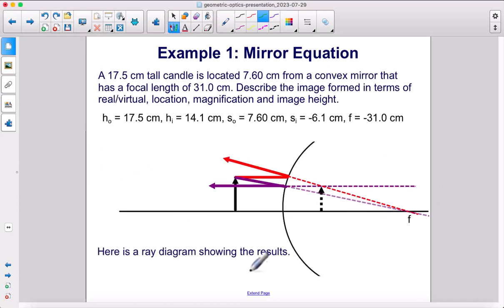Here is a ray diagram confirming the results. We have an image that is virtual, so it's on the dark side of the mirror. It is smaller and it is upright.